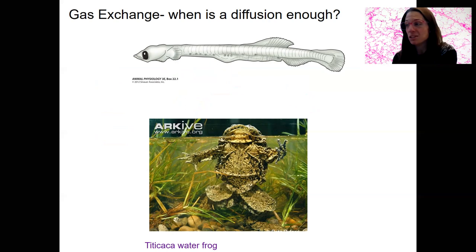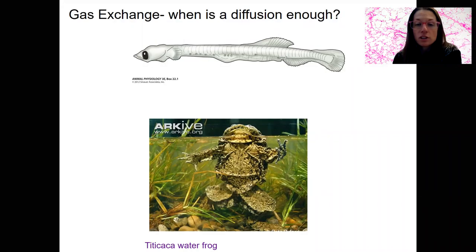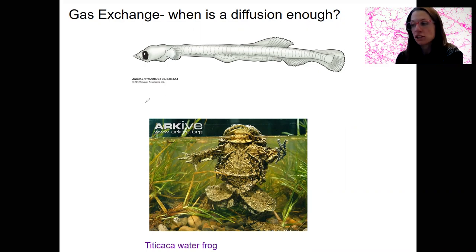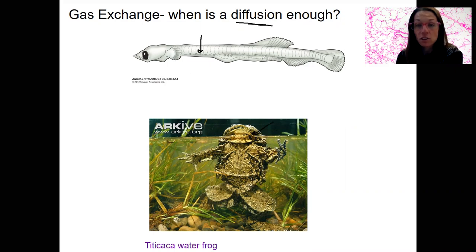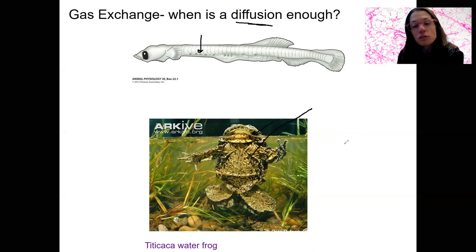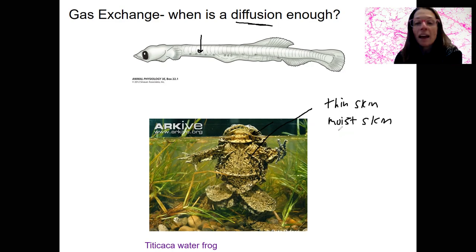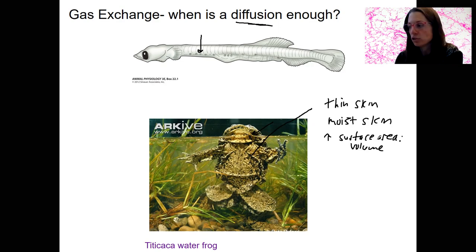Why am I showing you these two other organisms here? This is showing two organisms that can get by primarily with just diffusion — they can maintain adequate gas exchange with just diffusion across the skin. This one has a very high surface area to volume ratio, and so does this one but through a different mechanism — all these flaps of skin. Other features these organisms have are thin skin, moist skin, and a high surface area to volume ratio to facilitate high levels of diffusion.